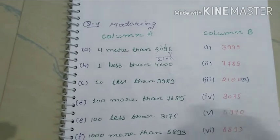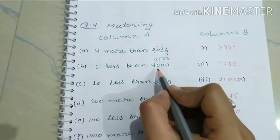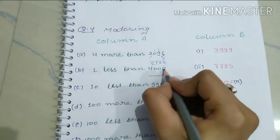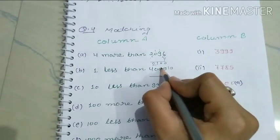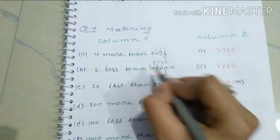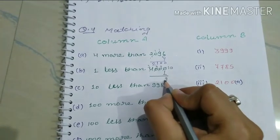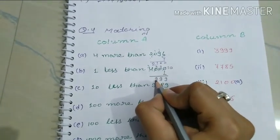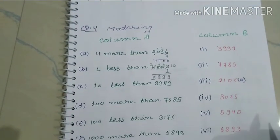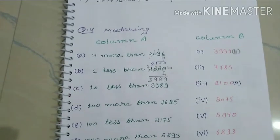Next: 1 less than 4000. We subtract 1 from 4000. The 0s borrow to give 9s, and the thousands digit becomes 3. So 4000 minus 1 equals 3999. This matches answer B.